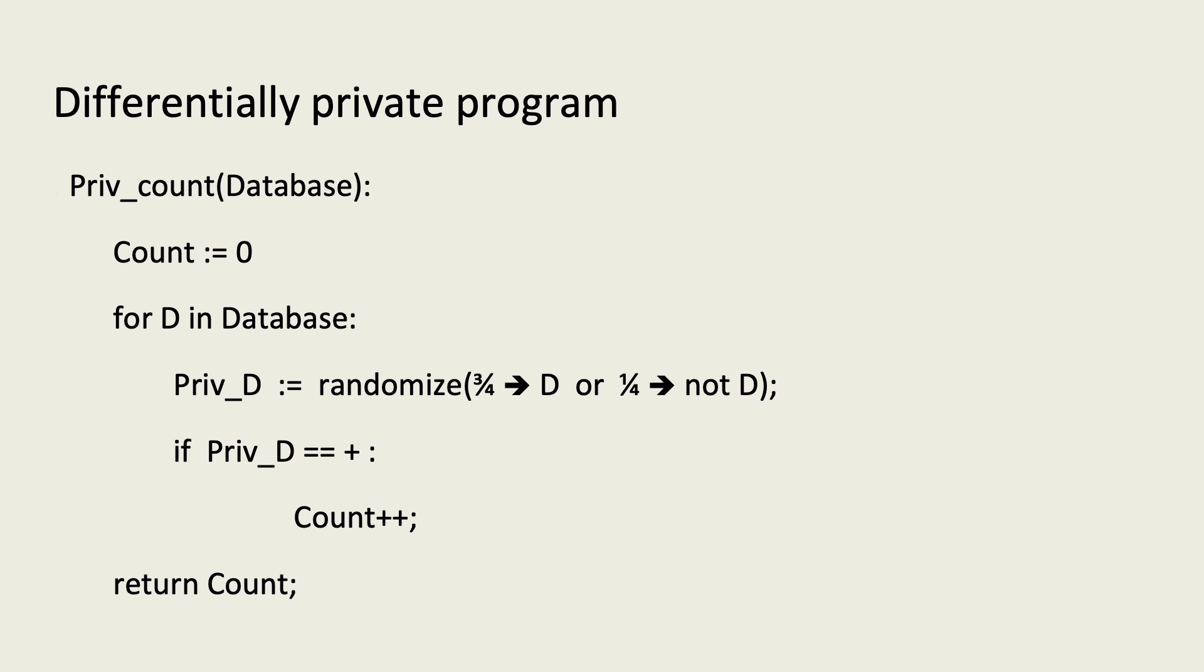To produce privatized data points, the algorithm looks at each data point one by one. And with a probability of one-fourth, it flips the value of the data point. It counts up the number of privatized data points that are positive.